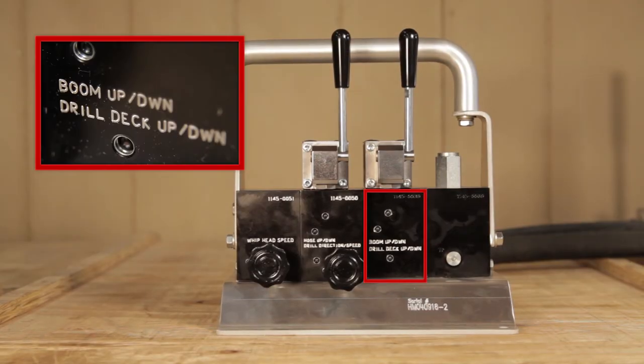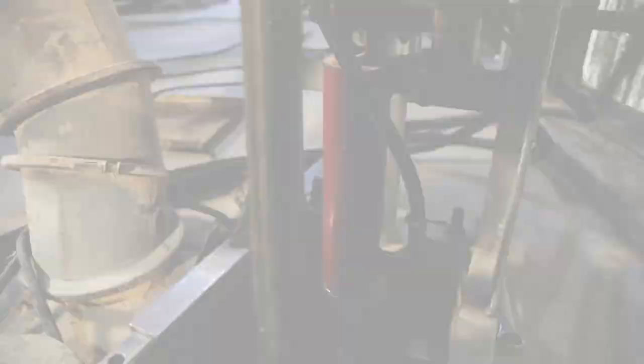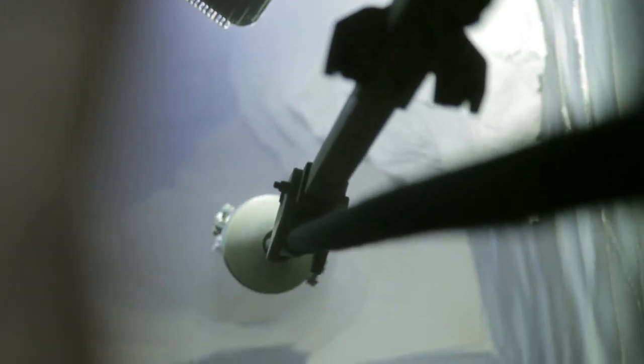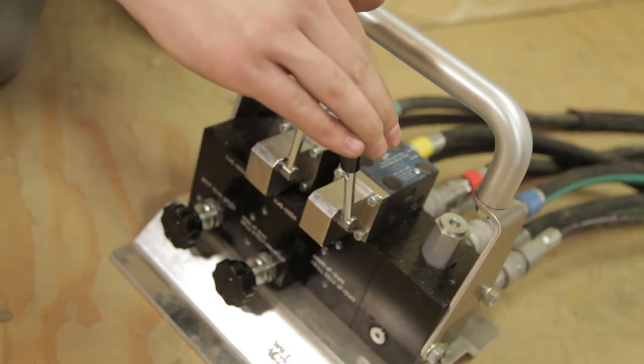The valve block labeled boom up down extends and retracts the hydraulic cylinder attached to the bin mount, allowing for precise positioning of the boom arm inside the bend. This is a spring-centered directional valve and has no flow control knob.